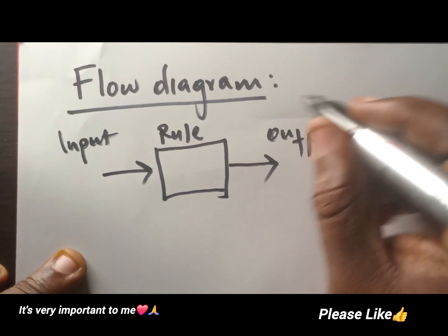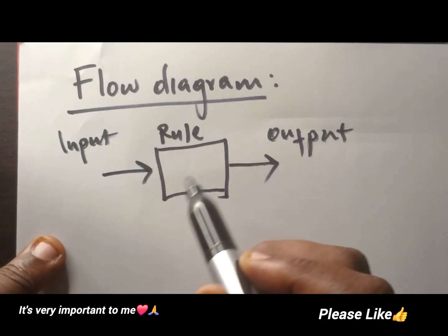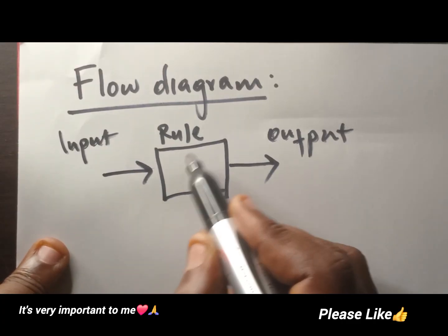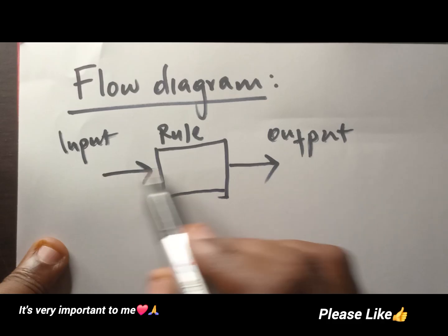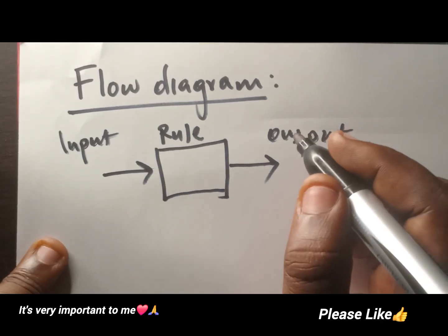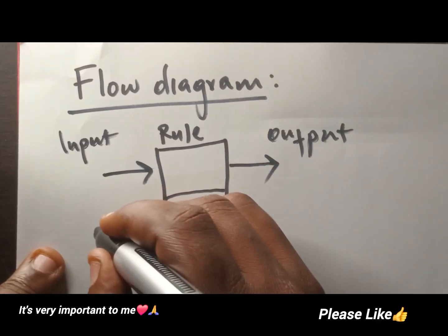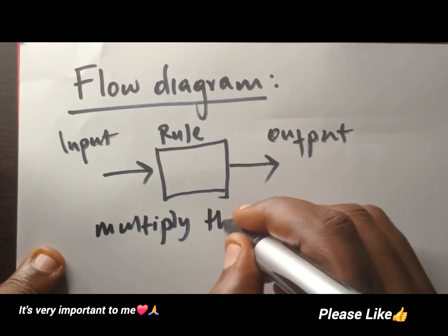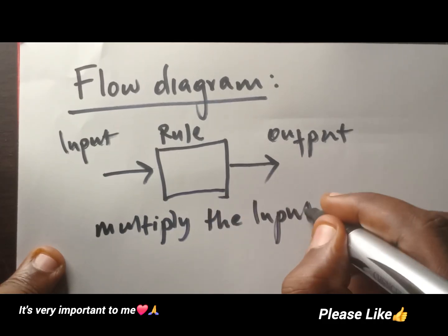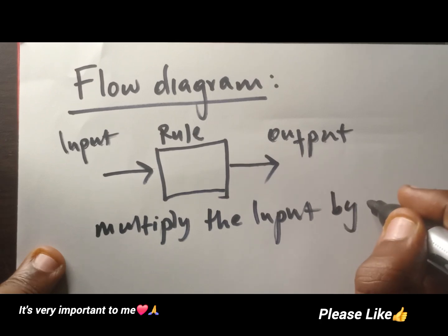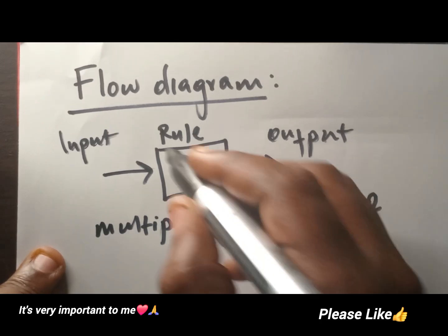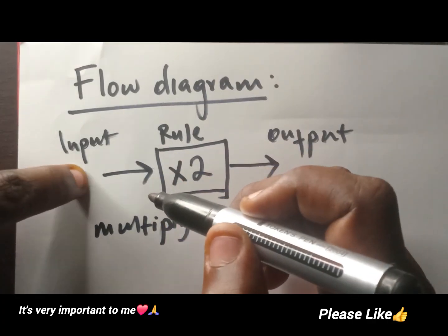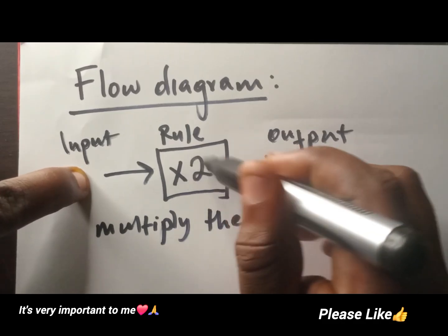The number on this side of the flow diagram, we call it input — it's a number that goes inside the rule. Think of it like a machine; it's like the process. This is the input, you put it inside, and whatever is happening here, you get your answer out. So in this case, let's say they say multiply the input by two. So inside you will have two, and before this number goes out, it will be multiplied by two.